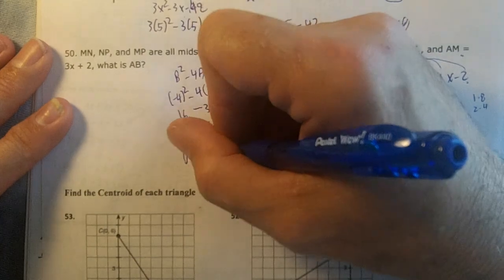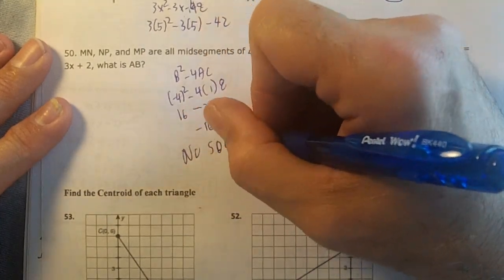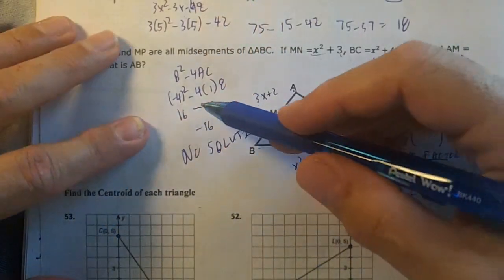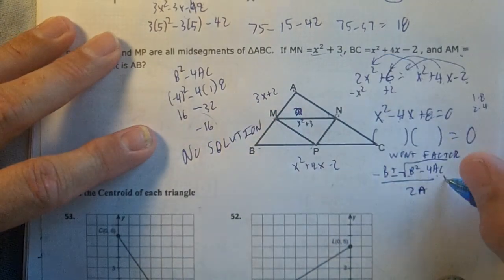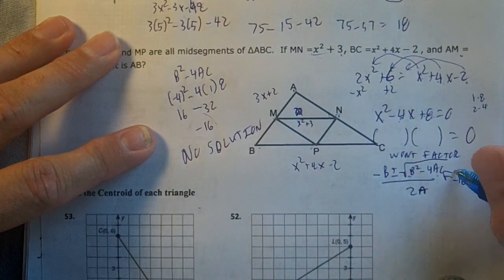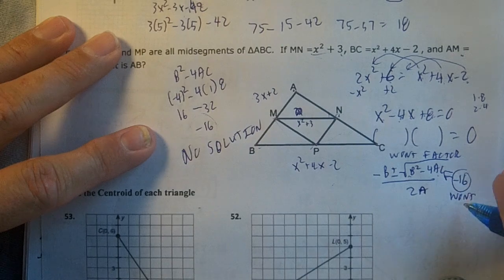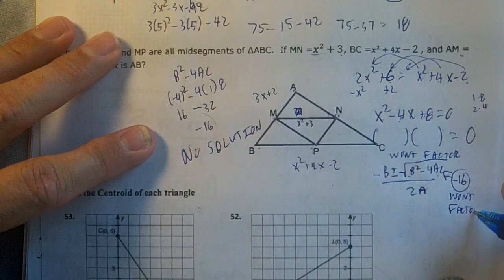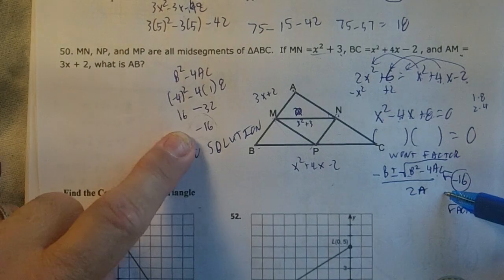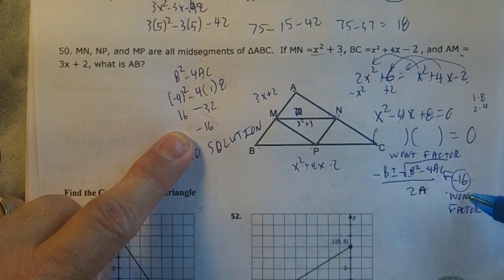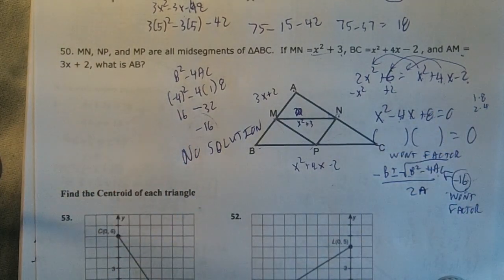There's no solution to this problem. Since the discriminant is negative, you can't factor a negative. There's no solution.